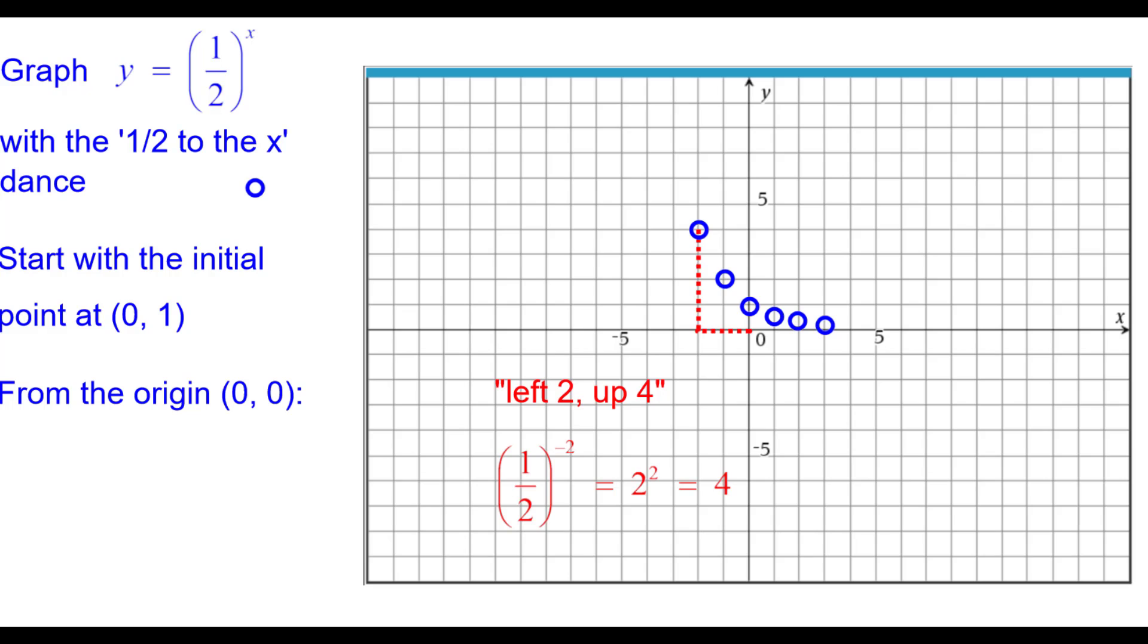Left 2 up 4. A half raised to the negative 2 is 2 raised to the positive 2, which is 4. Left 3 up 8. 1 half raised to the negative 3 is 2 to the positive 3, which is 8.